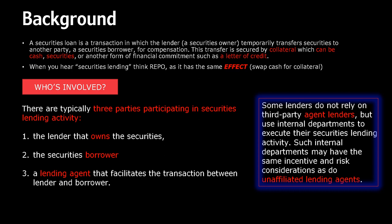When we say parties, who is involved in these transactions? There are typically three parties participating in securities lending activity. Number one: the lender that owns the securities. Number two: the borrower. And number three: a lending agent that facilitates the transaction between lender and borrower. However, some lenders do not rely on third-party agent lenders but use internal departments to execute their securities lending activity, which may have the same incentive and risk considerations as unaffiliated lending agents.